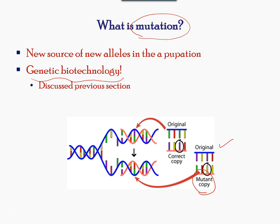Certain environmental conditions sometimes favor mutation, such as the example of finches with larger beak sizes surviving the drought conditions.